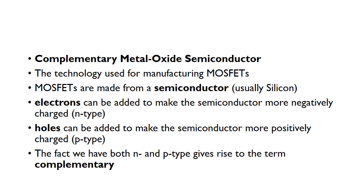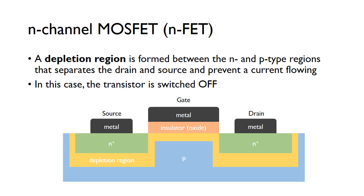This is where the name comes from. We've got a semiconductor and because we've got both n-type and p-type, these are complementary to each other. You can get NMOS — that's negative metal oxide semiconductor — or PMOS, positive. But complementary metal oxide semiconductor means we've got both n-types and p-types.